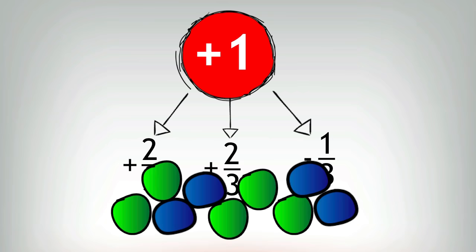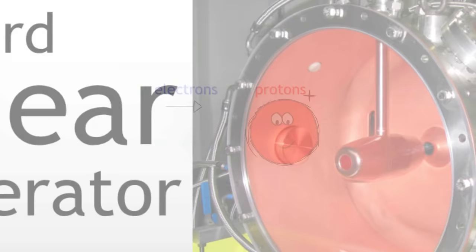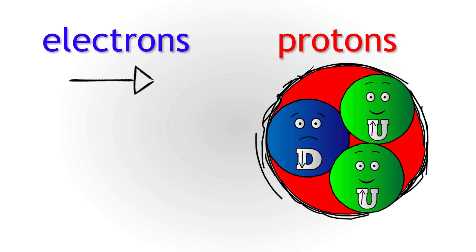Quarks are the fundamental building blocks of all particles that we know of. At the Stanford linear accelerator, electrons were fired at protons and found to bounce off of tiny particles inside them. It had taken four years, but this was the first evidence for the existence of quarks.